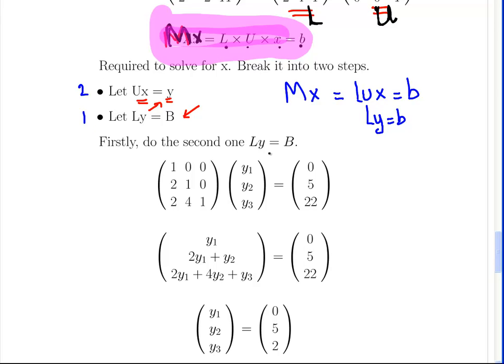So, let's firstly do the second one first. Ly is equal to b. So here we have L and again that was from the last, we found what L was in the last exercise. Here's some undetermined coefficients y that we're going to use to put into the top equation here. And we have the answer there to be the values for b, 0, 5 and 22.